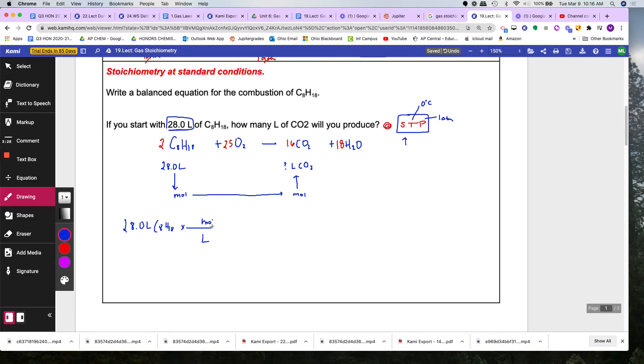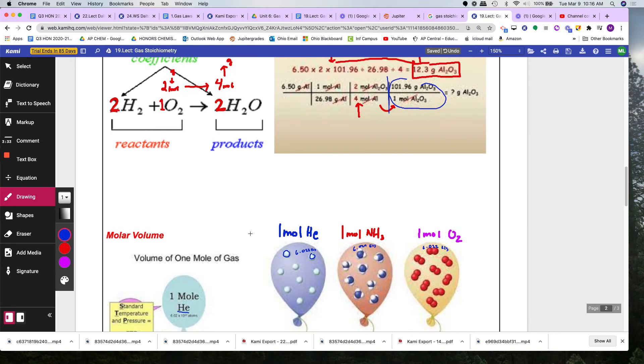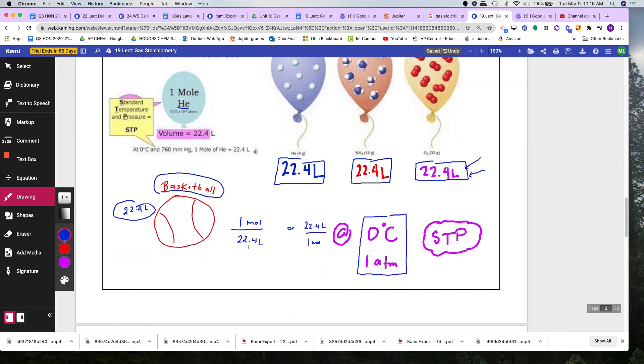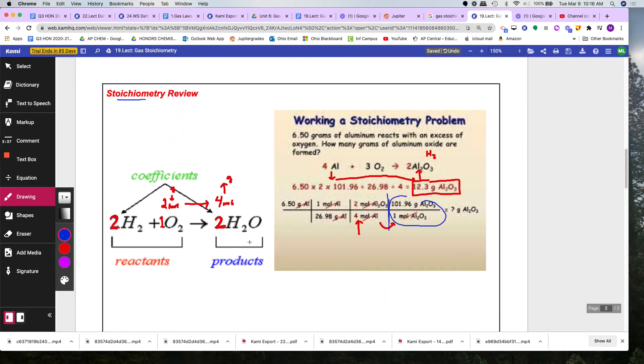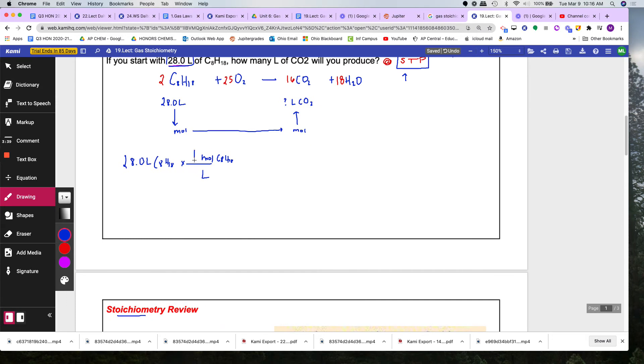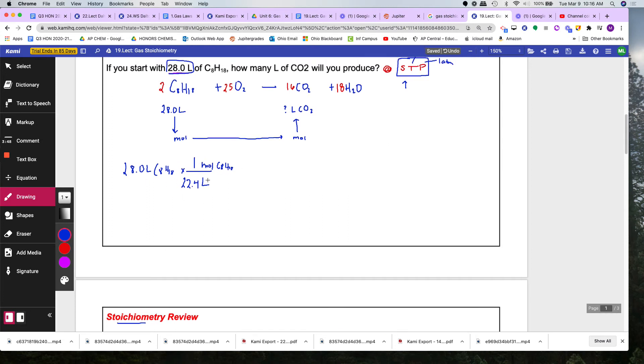You have liters to moles. What is the conversion of any gas? This one is C8H18. If you look down here, one mole of any gas is 22.4 liters. So one mole is 22.4 liters. So what you did is, instead of using PV equals NRT, you just converted liters to moles. Which is a shortcut. Liters cancel.